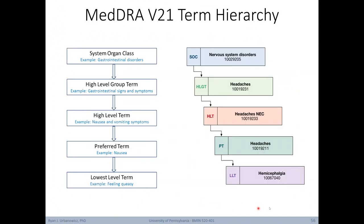For example, here on the left, the highest level is a gastrointestinal disorder. A connected term the level below could be a gastrointestinal signs or symptoms. Below this, the more specific idea of nausea and vomiting symptoms. Below that, nausea, and finally, feeling queasy.